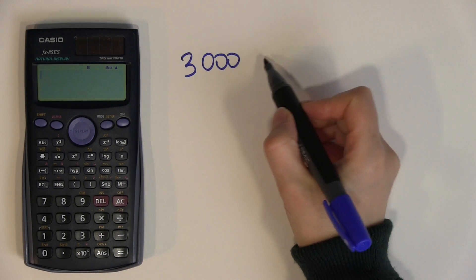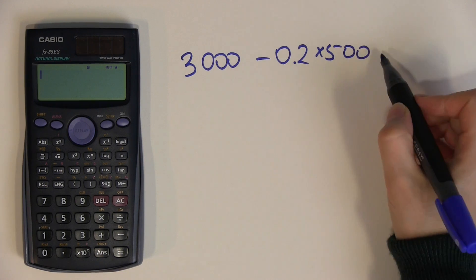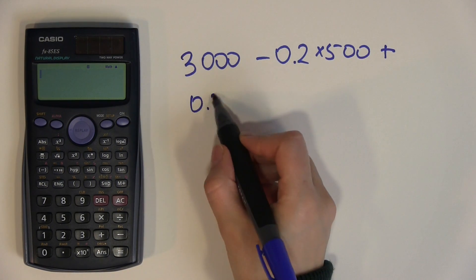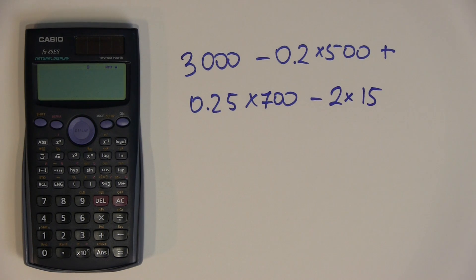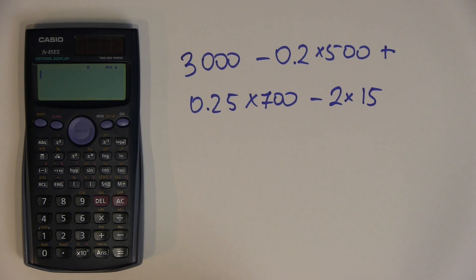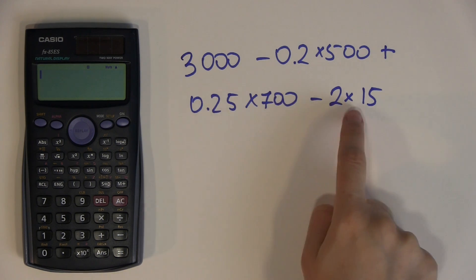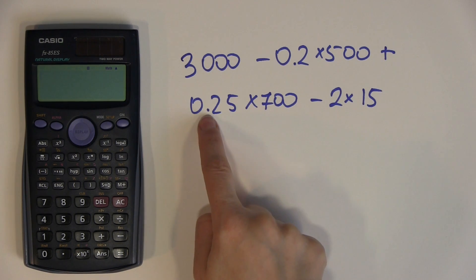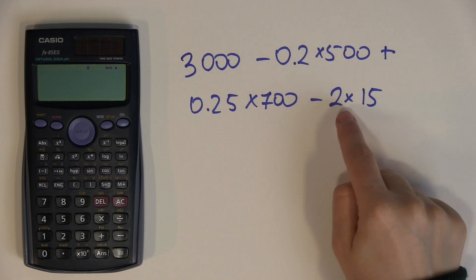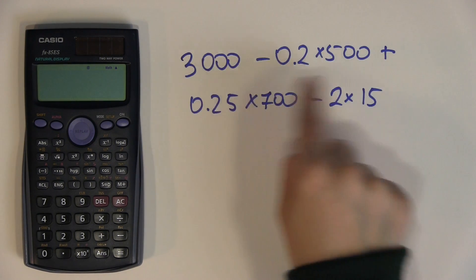Now let's move on to practical examples and see the real power of the scientific calculator. Suppose you need to calculate 3000 minus 0.2 times 500 plus 0.25 times 700 minus 2 times 15. With an ordinary calculator, you'd need to identify the higher-order operations first — multiplications take precedence over addition and subtraction — so you'd calculate 0.2×500, 0.25×700, and 2×15 separately, then combine the results.